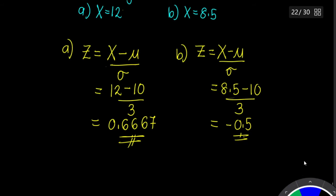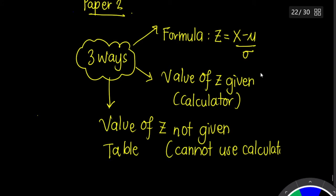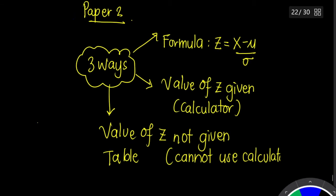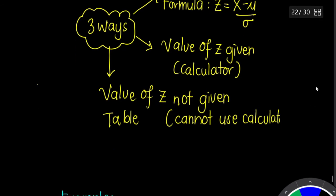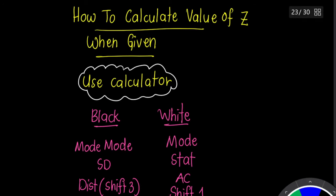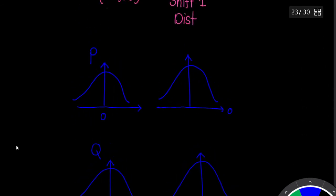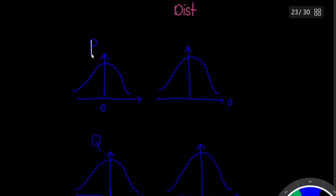Now let's look at how to calculate the value when Z is given — we use the calculator. For the black calculator: press Mode, Mode, SD Distribution. For the white calculator: press Mode, then Stat (number 3), press AC, then Shift, press 1. Before we go into the calculator, you need to know a few things.